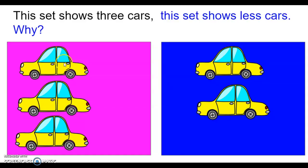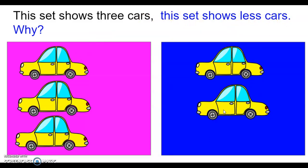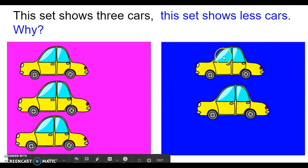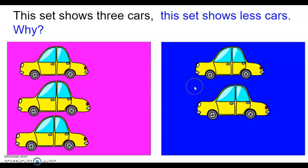Alright, so this looks a bit different. This set shows three cars — one, two, three. This set shows less cars — one, two. So why are they able to say that this set of cars shows less? Because the blue square has less; it's not as much as the cars in the pink square. The pink square has one, two, three, and the blue has one, two. So we could say that two is less than three.